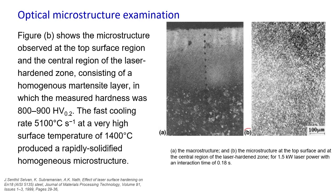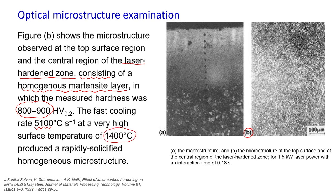Figure B shows the microstructure at the top surface and central region of the laser hardened steel, revealing a homogeneous martensite layer with hardness values of 800 to 900 HV. Treated samples were also examined using a scanning electron microscope (SEM) to analyze the homogeneity of martensite and carbide precipitation in the rapidly solidified region. This is attributed to fast cooling at 5100 °C/s from a peak temperature of about 1400 °C.